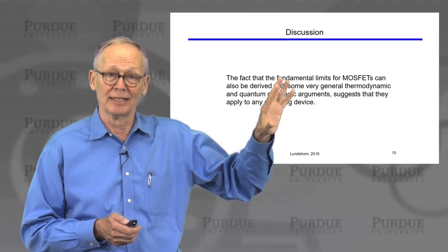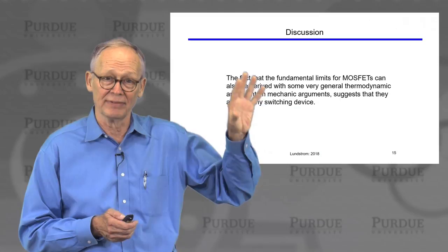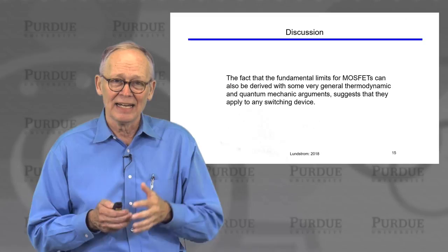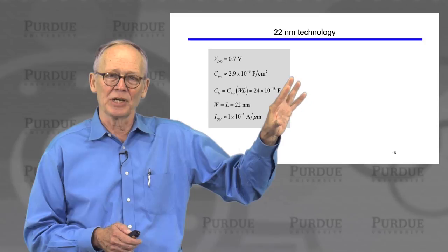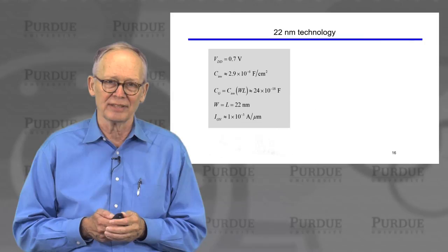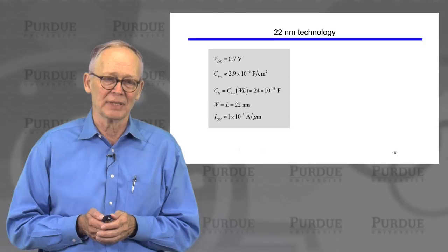This means it is unlikely we'll be able to invent a device that has fundamental limits better than a MOSFET. The key question will be: how close to those fundamental limits can MOSFETs get? Is there another device that could get closer to those limits? Let's address that question — how close are we with current state-of-the-art technology?